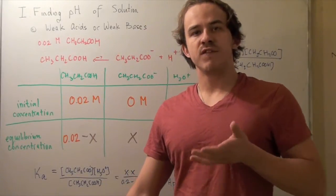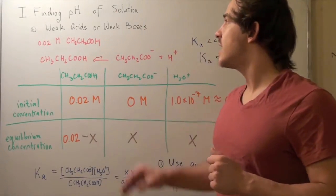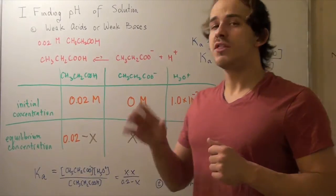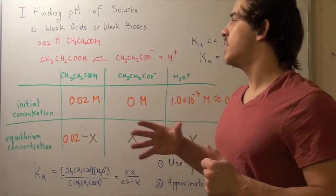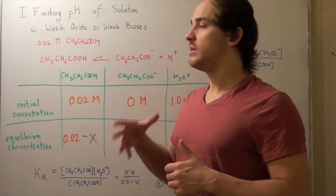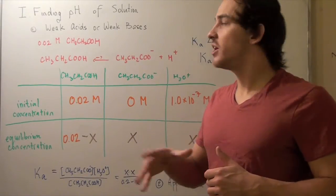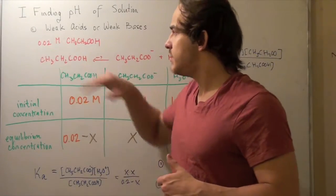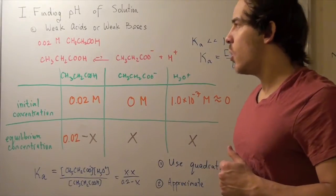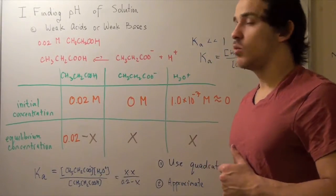So now let's see how we find the pH when we talk about weak acids and weak bases. Well, things get a little bit more complicated with these guys because weak acids and weak bases don't dissociate completely. They're incomplete. So let's begin with 0.02 molar of our acetic acid, a weak acid.